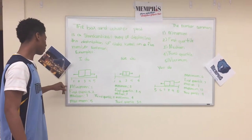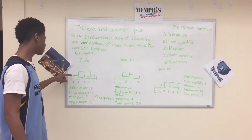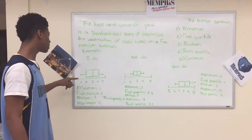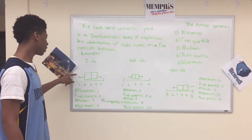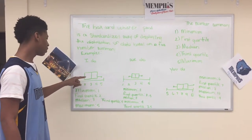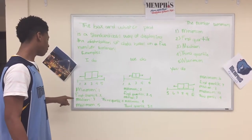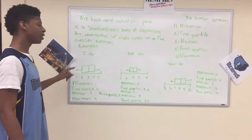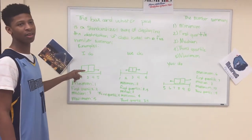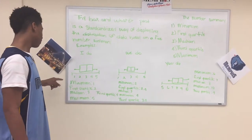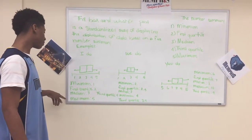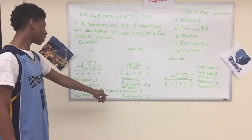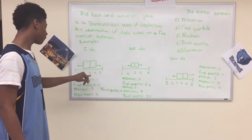The minimum is one because this is the lowest point. The first quartile is two because it lands between the one and the three. The median is three. The maximum is five. And my third quartile is going to be four.